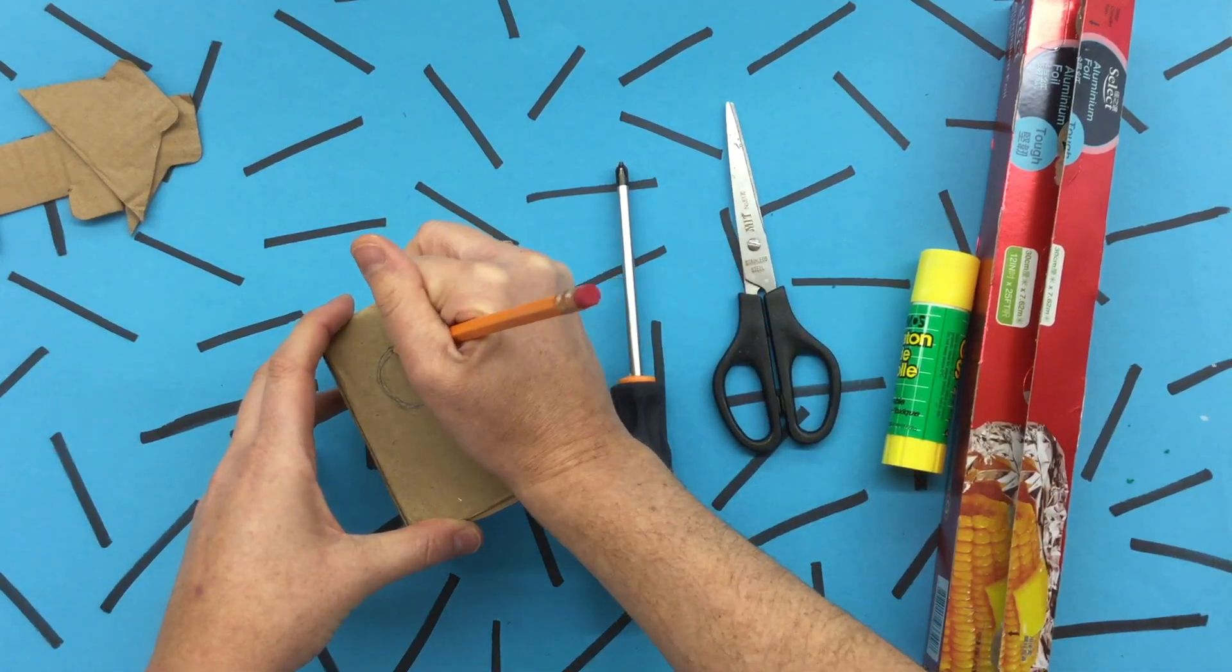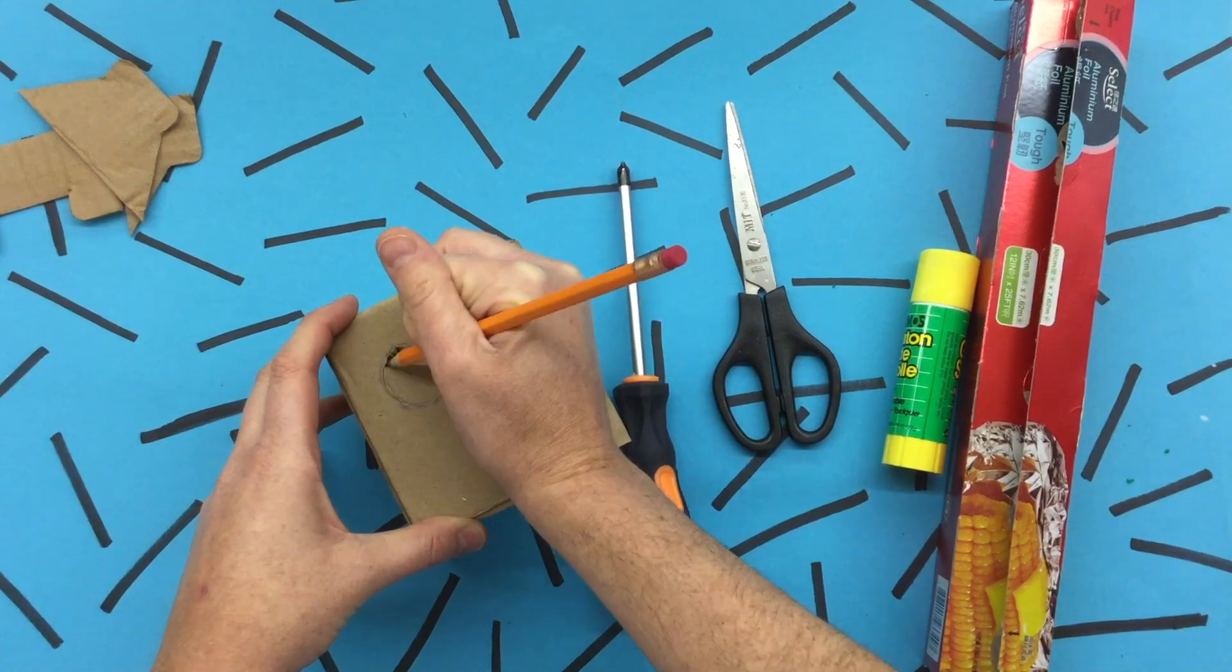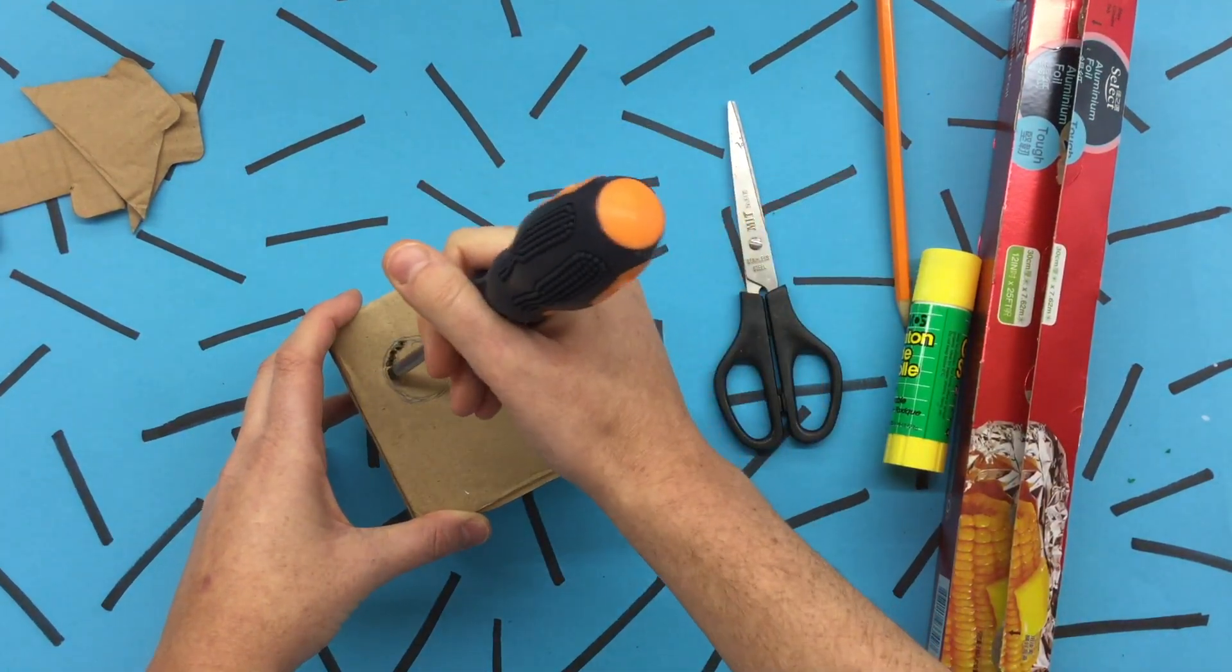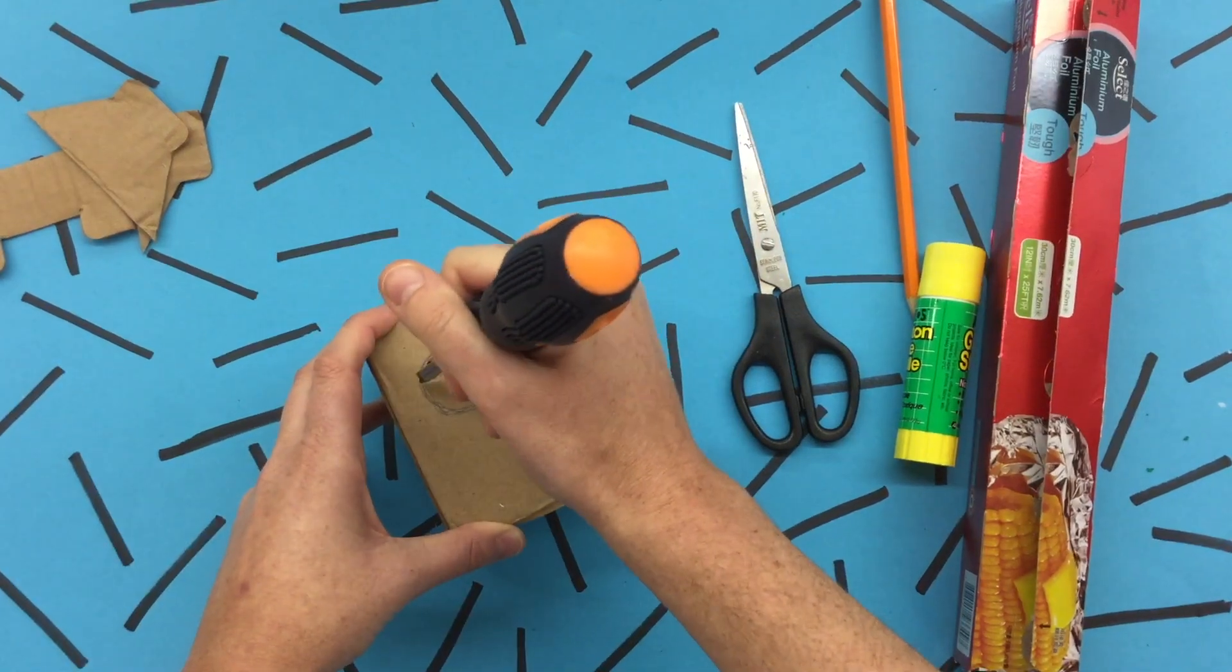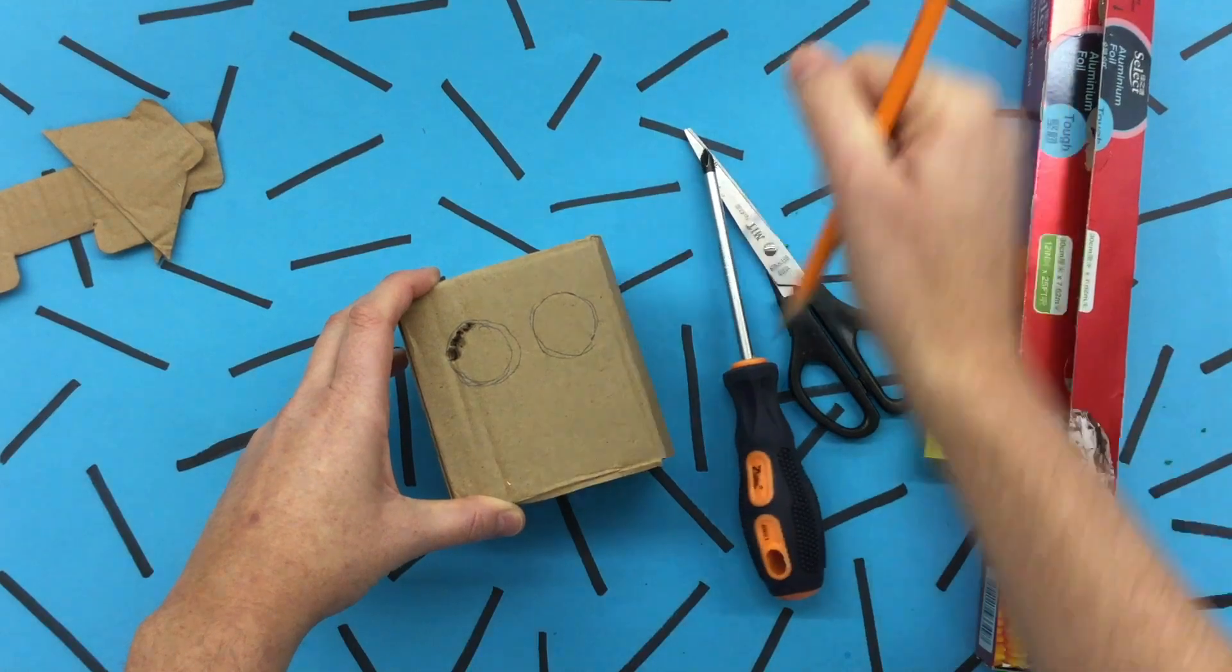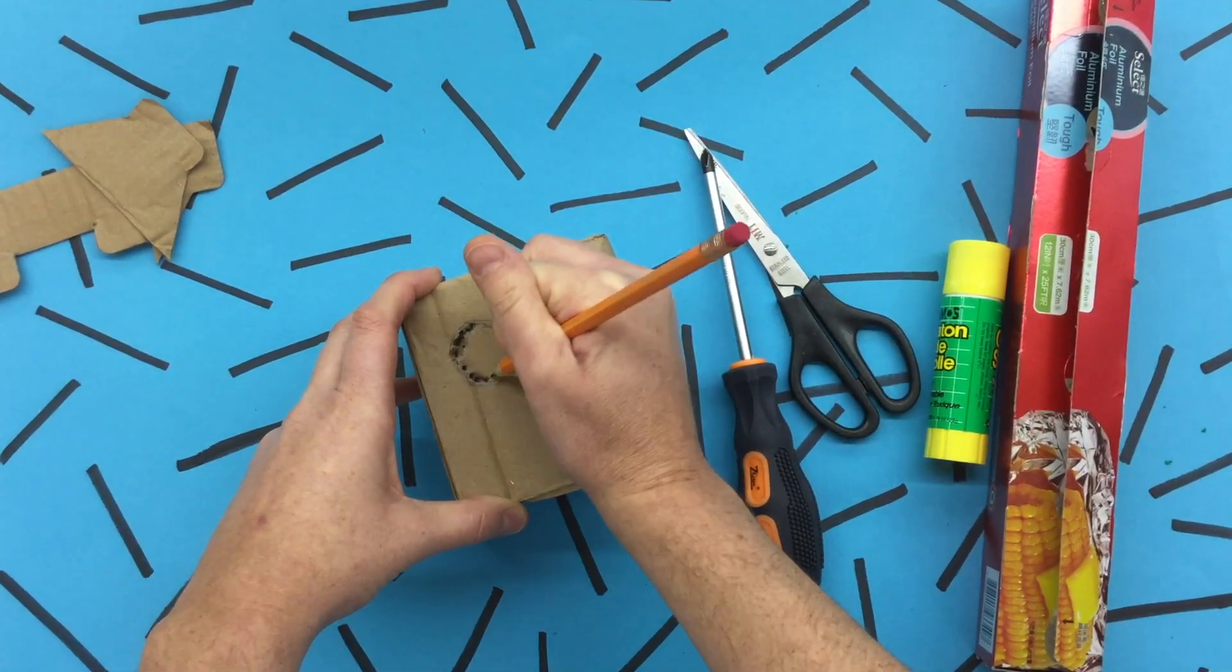You take your sharp pencil and you poke holes. You go a hole next door and keep poking. You can also do this with a screwdriver. That's fine too. Just see what you have and what works best. I prefer the sharp pencil. I'm going to speed things up so you guys can see how it's done and it can move a little bit faster.